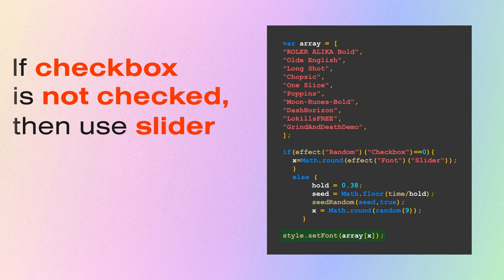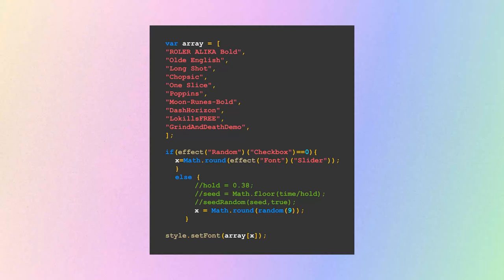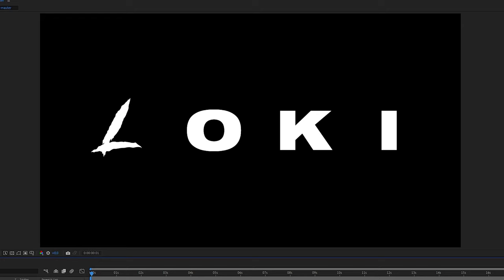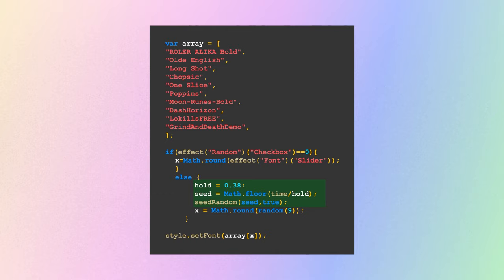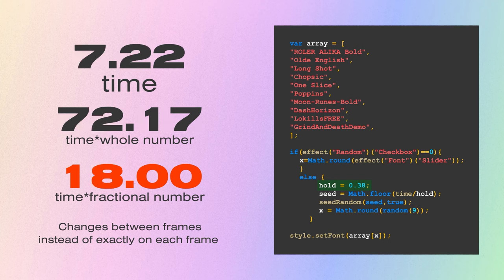The random function changes its value every single frame — have a look at what it looks like without the rate-control lines; that is way too fast. Those three lines affect how often our random function changes values. Without going into the math too much, by dividing the time value by a fractional number we're telling the random function to change values every quarter of a frame, half a second, or whatever interval we want.